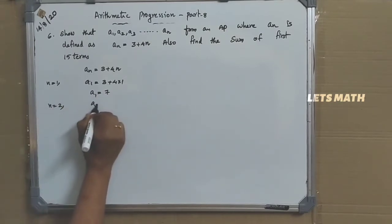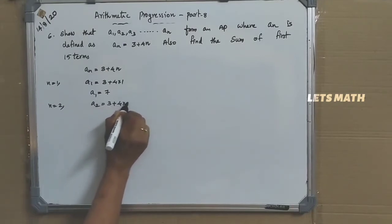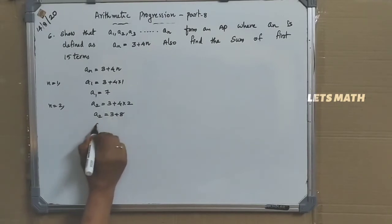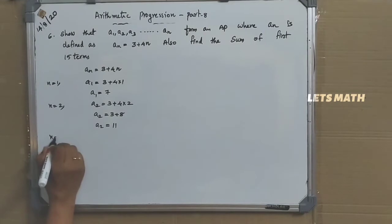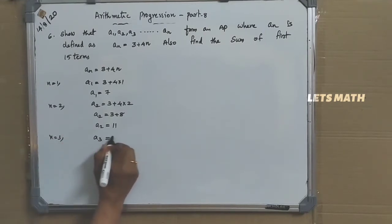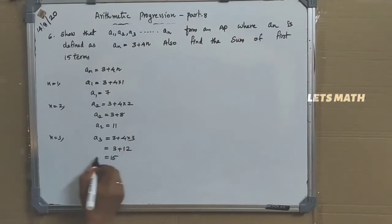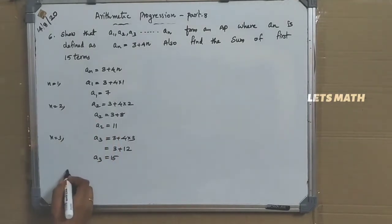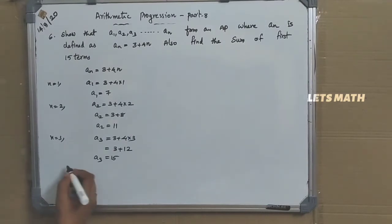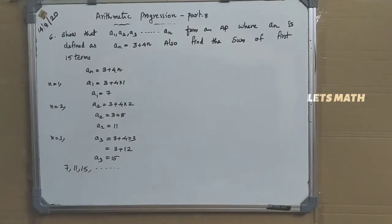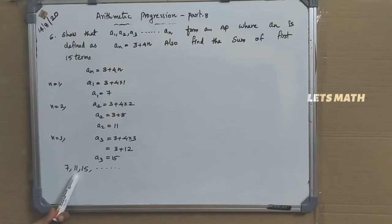For N equal to 3: A3 equal to 3 plus 12 equal to 15. So A1 equal to 7, A2 equal to 11, A3 equal to 15. Check: 11 minus 7 is 4, and 15 minus 11 is also 4. So it forms an AP with first term 7 and common difference 4.